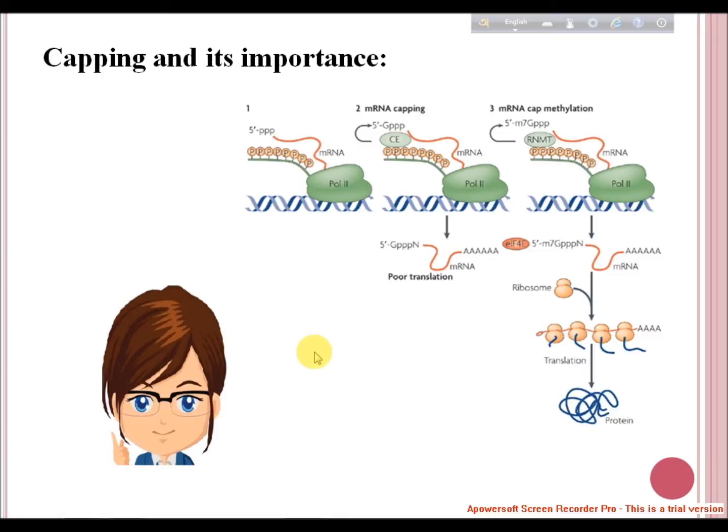What is the importance of capping? Capping prevents 5' degradation from 5' exonucleases. Capping provides stability to mRNAs. Capping facilitates the transport of mRNA into the cytoplasm; otherwise they remain in the nucleus. Capping enhances the efficiency of translation of mRNAs. Capping enhances the efficiency of splicing at the 5' end intron. Capping with poly-A provides synergism during translation.